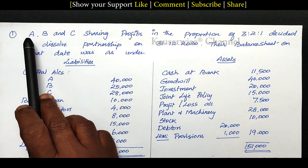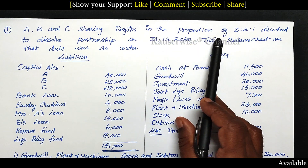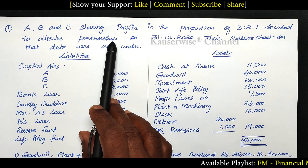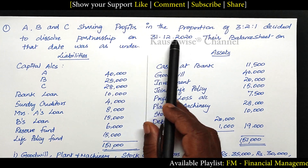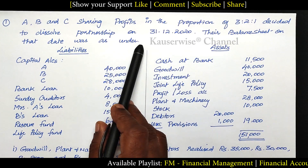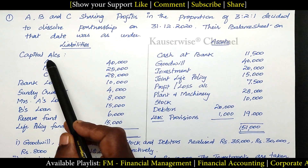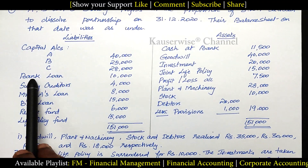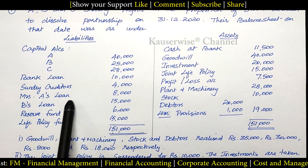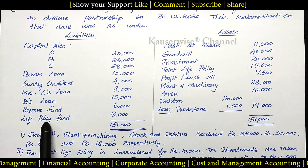A, B and C sharing profits in the proportion of 3:2:1. They decided to dissolve the partnership firm on 31st December 2020. Their balance sheet on that date was as under. Under liabilities: three partners' capital account, bank loan, sundry creditors, Mrs. A's loan, B's loan, reserve fund, and life policy fund.